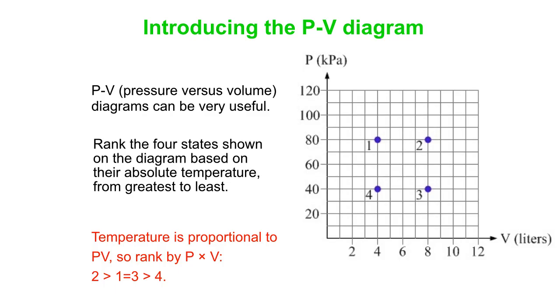1 or 3 are the same. And their temperatures, 1 and 3s, are twice as big as the temperature for state 4. So you can tell an awful lot from a PV diagram like this.